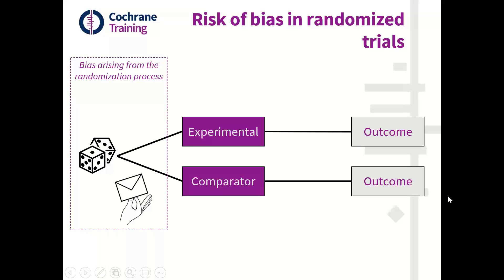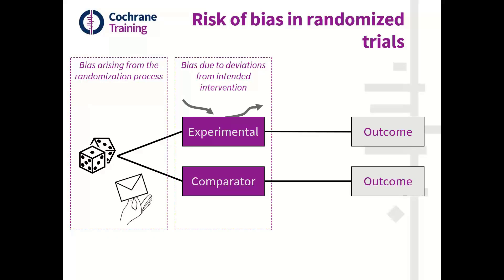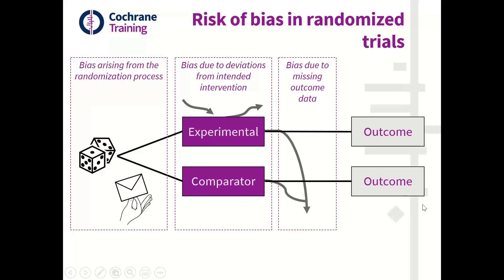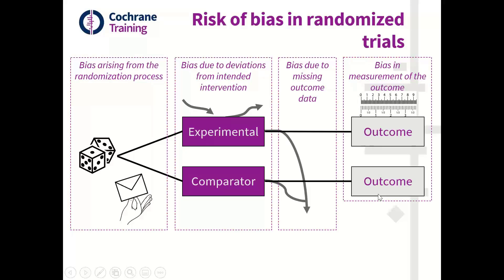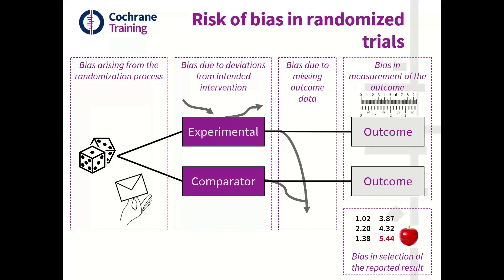We might have bias arising from the randomization process, bias due to deviations from intended interventions whereby knowledge of the assigned intervention might lead you to deviate from it, bias due to missing outcome data with people dropping out of the trial, bias in measurement of the outcome which may arise from lack of blinding of outcome assessment, and finally the last domain in the ROB2 tool focuses on bias in selection of the reported result — which is what we'll focus on today.